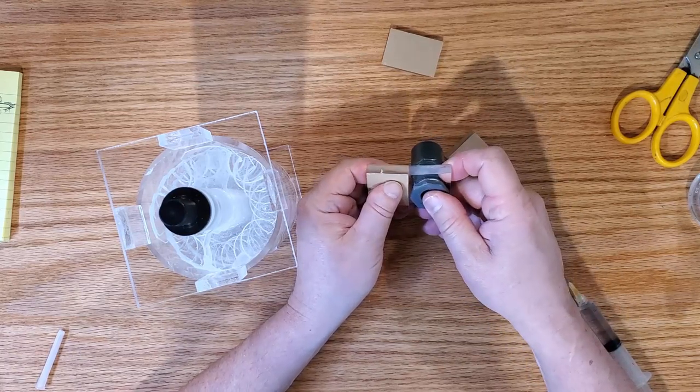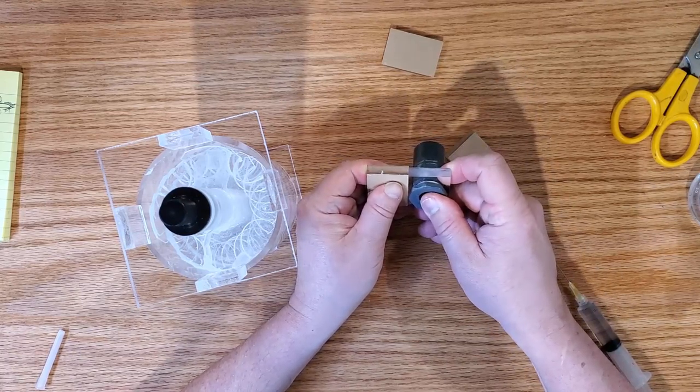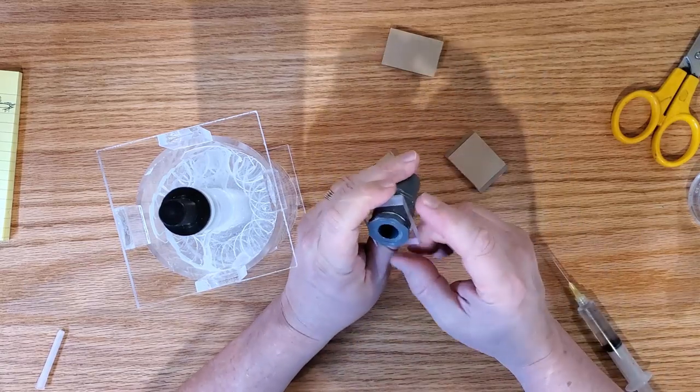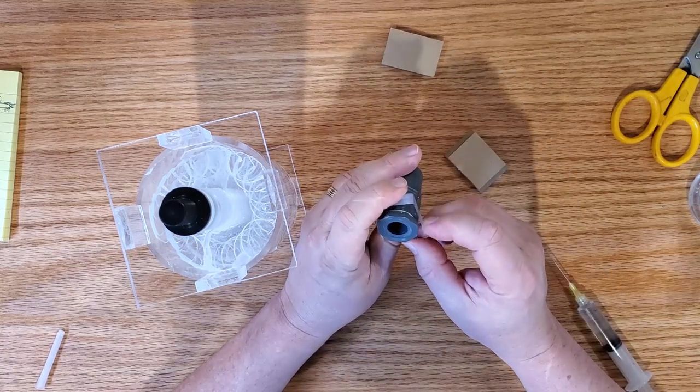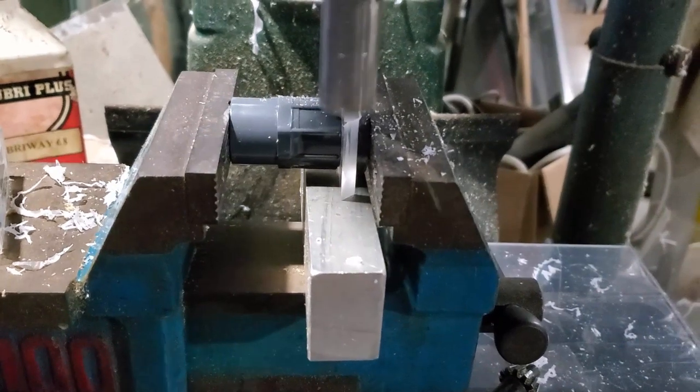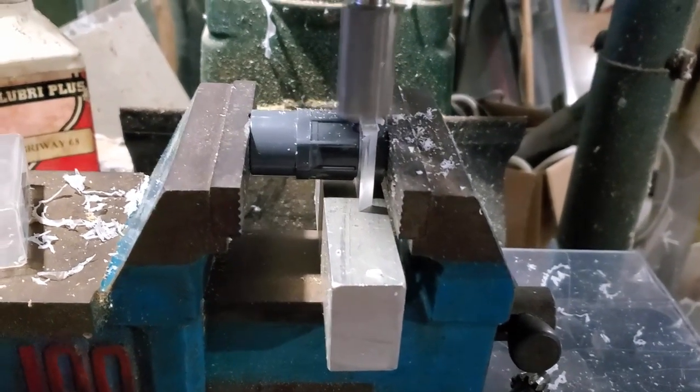Now, the easy fix, of course, for this is I'm just going to mount this in the milling machine and just shave off the bow. And then it'll fit properly. But that's just kind of how the rest of this is going to go.